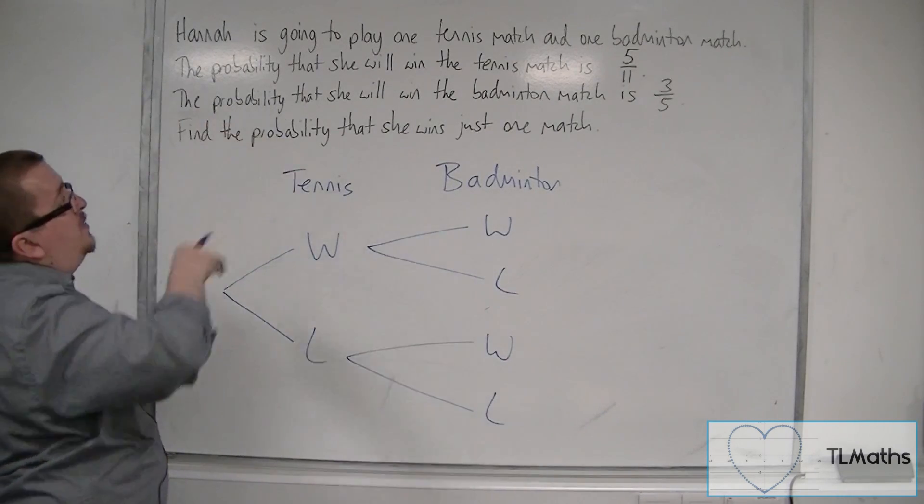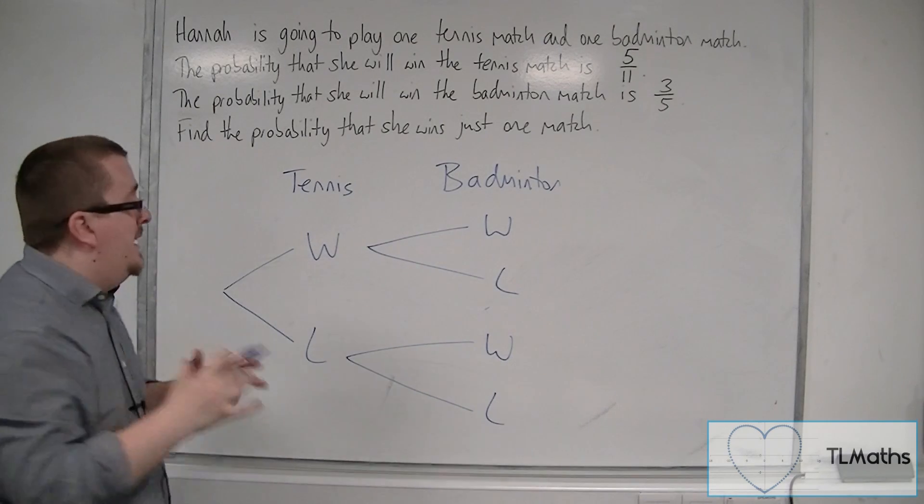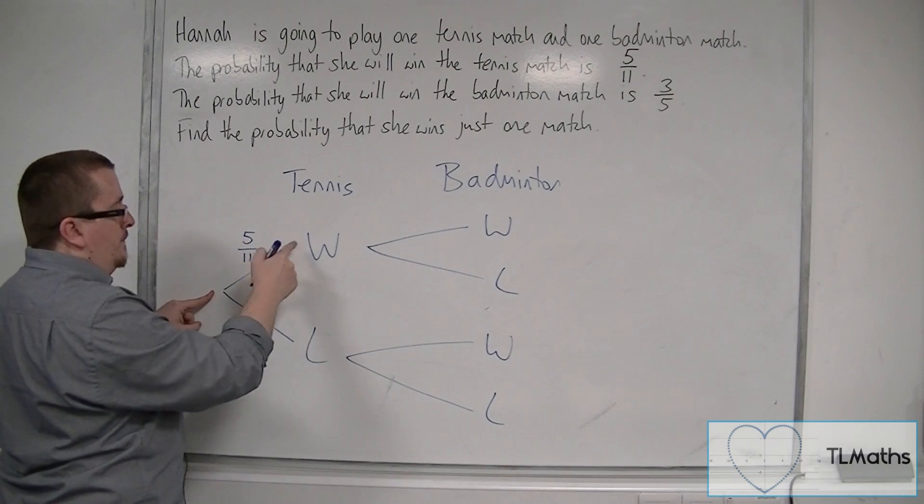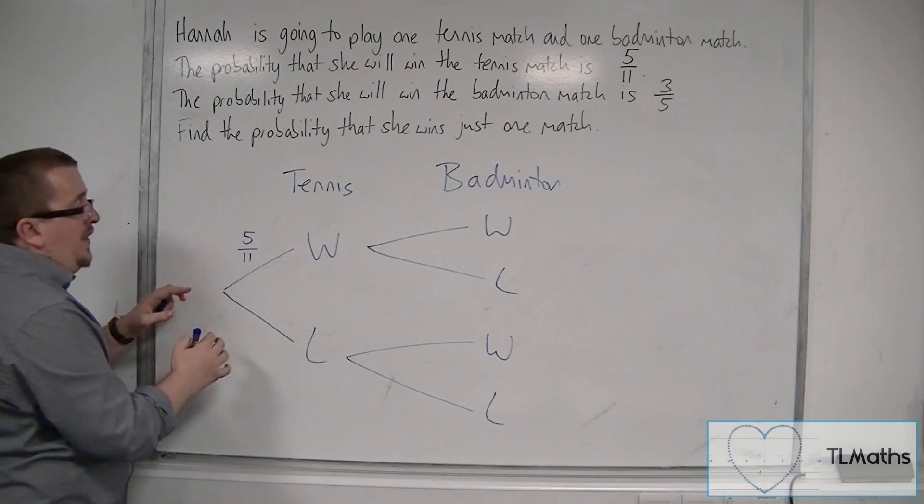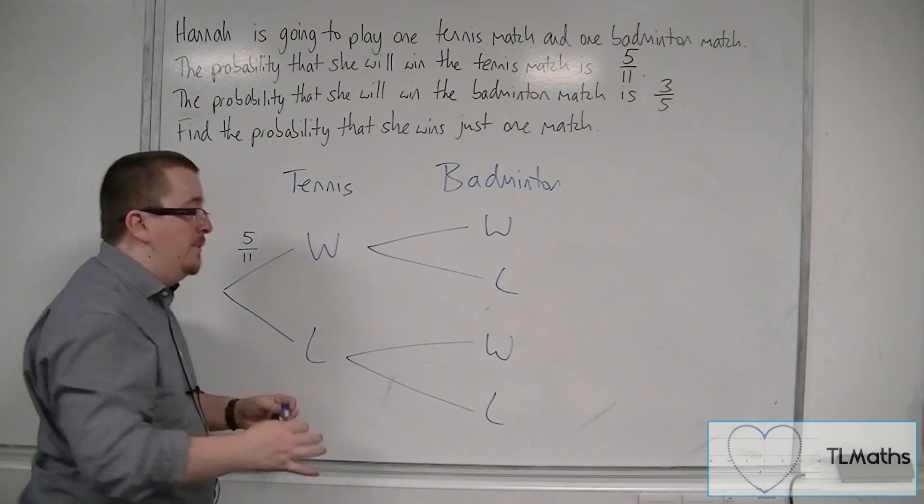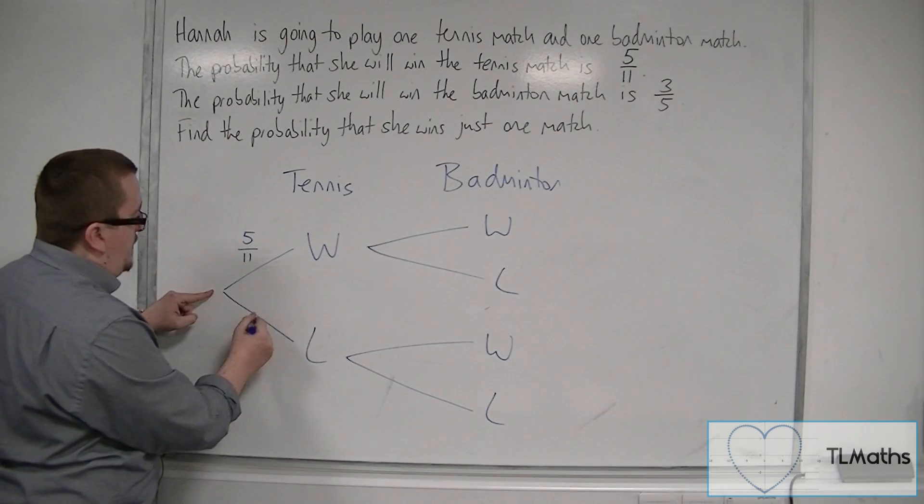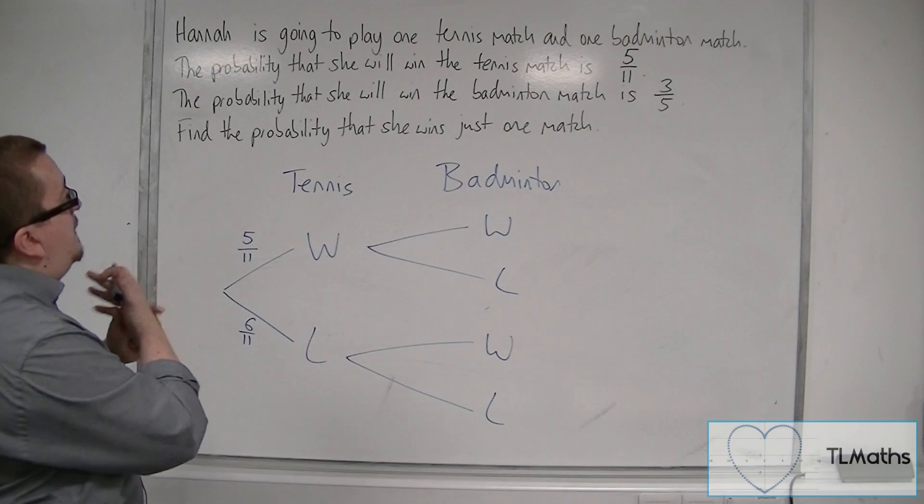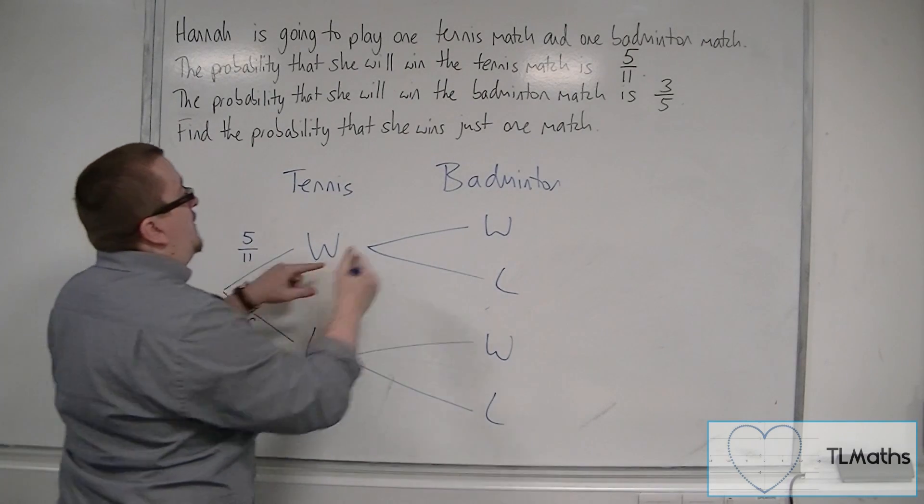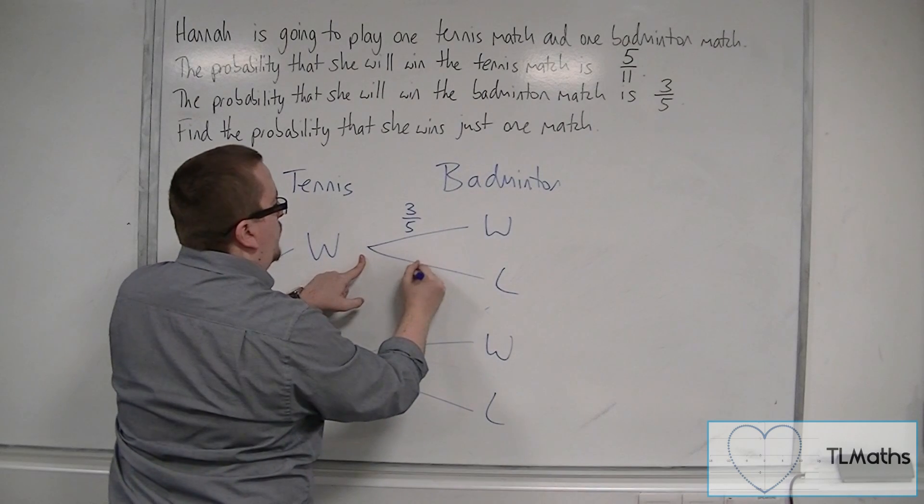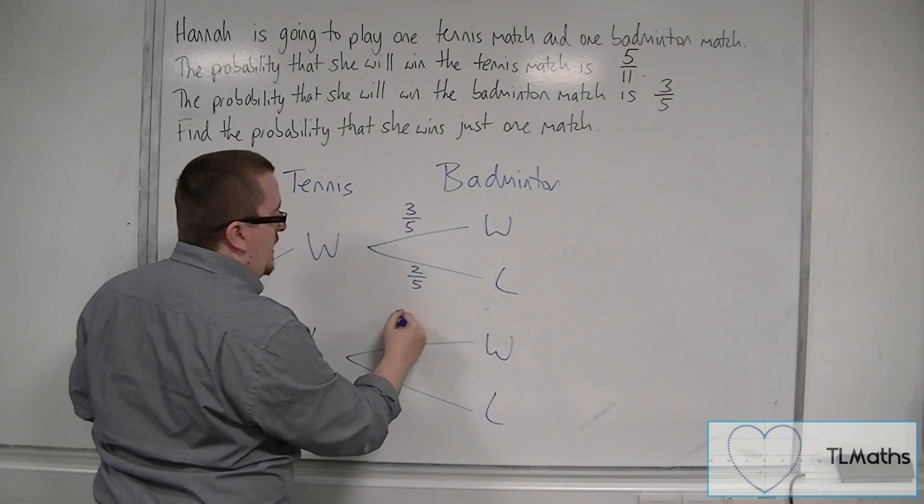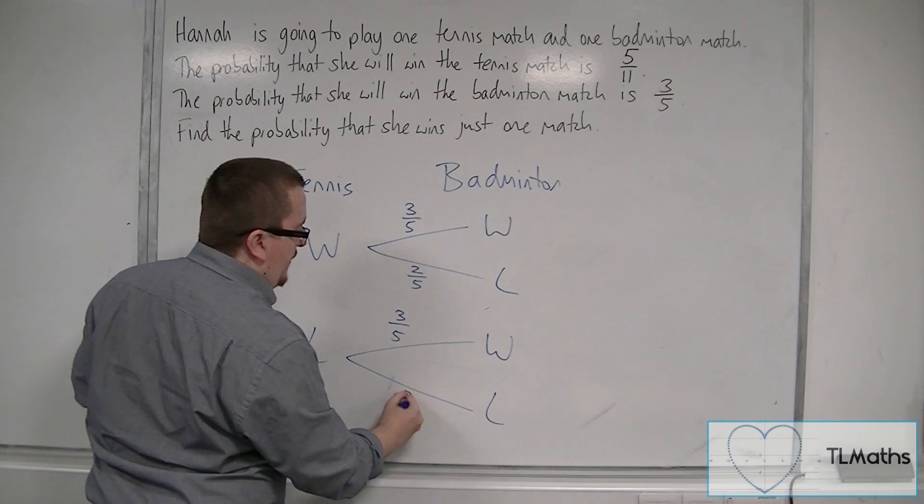If the probability that she wins the tennis match is 5 elevenths, we can put 5 elevenths on this branch here. And if she loses, because these probabilities need to add up to 1, this would have to be 6 elevenths. For badminton, we've got 3 fifths if she wins, and so this will have to be 2 fifths, because these need to add up to 1. And in a similar way, we have 3 fifths and 2 fifths here.